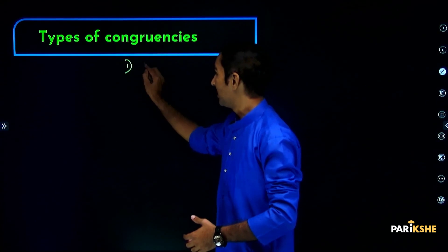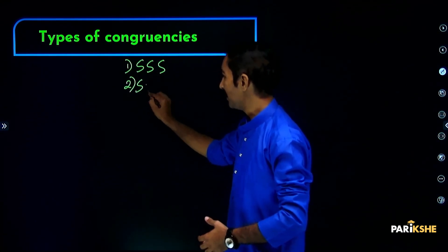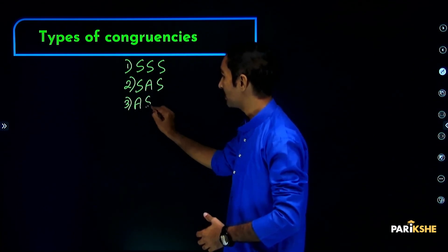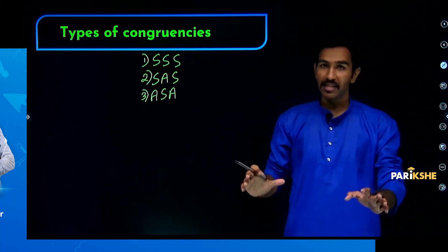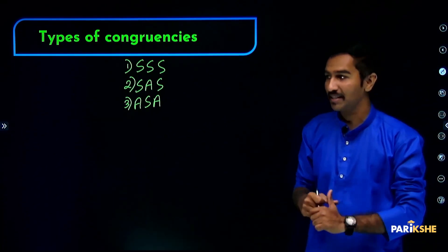There are different types of congruencies. The types of congruencies are: first SSS congruency, second SAS congruency, third ASA congruency. When the shape is the same and the size measurements match, we call it congruency.